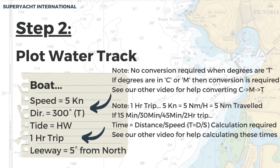Step 2: plot the water track. Gather the boat information. In this case, speed is 5 knots, direction of travel was 300 degrees true, and it was a 1 hour trip. We also have 5 degrees of leeway from north. Note: no conversion is needed when degrees are in true. If the degrees are in compass or magnetic, a conversion is required. Also note, this was a 1 hour trip, so speed equals distance, meaning the boat traveled 5 nautical miles in this time. If the time was less or more than 1 hour, the distance would need adjusting.